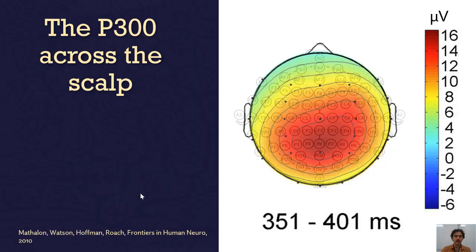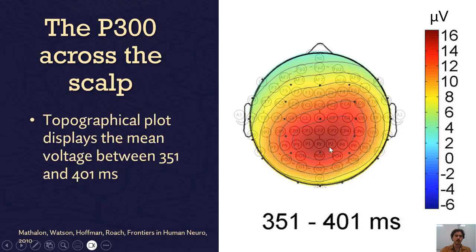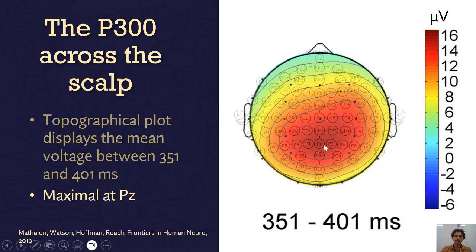The P300 is expected in the oddball detection task. Looking down at the top of someone's head, it has a peak right in the middle top of the head around electrode PZ. This topographical plot displays the average voltage in microvolts between 351 and 401 milliseconds after a stimulus comes on screen, and it is maximal at electrode PZ.